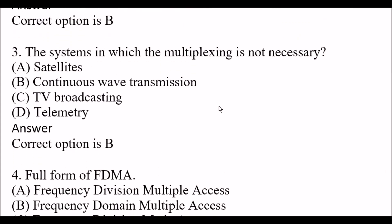Next question: The system in which multiplexing is not necessary. Option A: satellites. Option B: continuous web transmission. Option C: TV broadcasting. Option D: telemetry. The right answer is Option B, continuous web transmission.